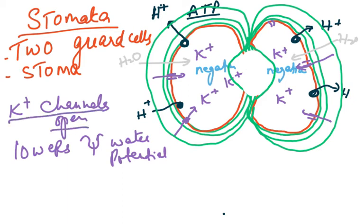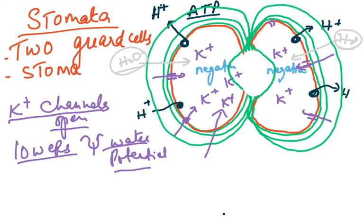Potassium ions diffuse in, lowering the water potential. Water then moves in by osmosis, increasing the volume of the guard cells. The inner wall moves apart, and this opening is called the stoma.